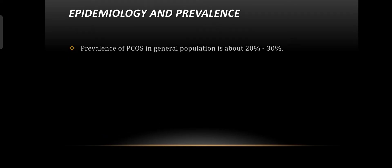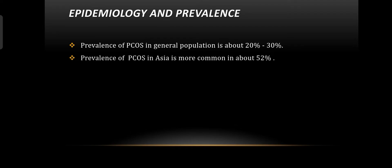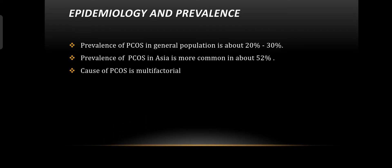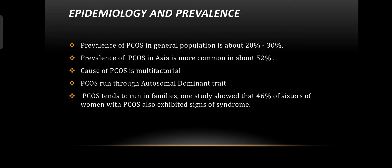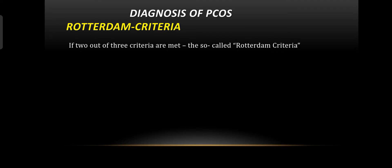Epidemiology and prevalence: in the general population, around 20 to 30 percent are affected by PCOS. The prevalence of PCOS in Asia is more common, at about 52 percent of cases. The cause of PCOS is multifactorial; PCOS runs through an autosomal dominant trait and tends to run in families. One study showed that 46 percent of sisters of women with PCOS also exhibit signs of the syndrome. Obesity is seen in 38 to 66 percent of women with PCOS.